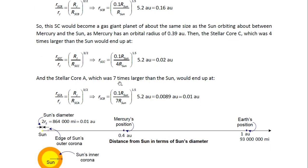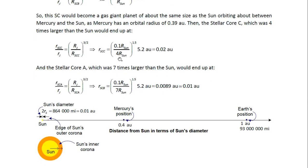And the stellar core A, which is 7 times larger than the Sun, would end up at the same equation except now we have 7 times radius of the Sun here, and that would give us 0.0089 AU. So that's approximately 0.01 AU.